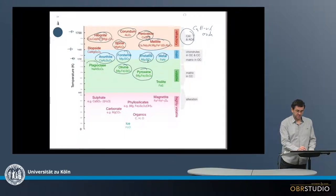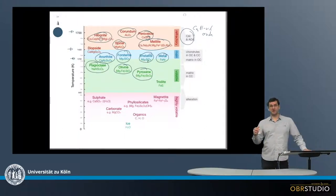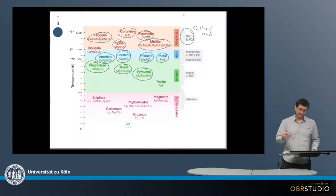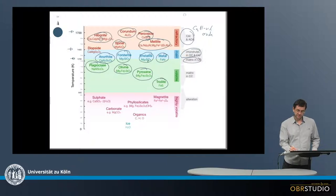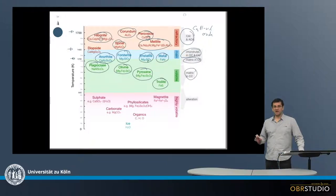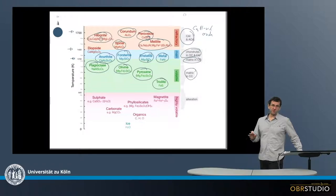Then comes plagioclase, which is a low-temperature feldspar with sodium inside—a volatile element. Troilite contains sulfur, which is also volatile. While the main elements are usually in chondrules and a little in matrix, these more volatile elements are primarily in the matrix of the chondrites.